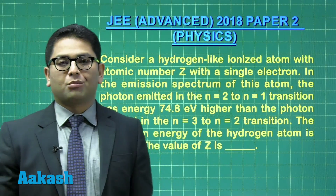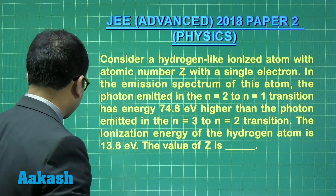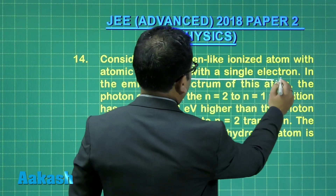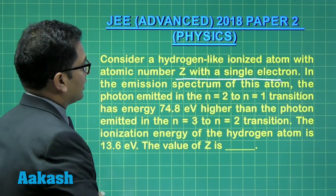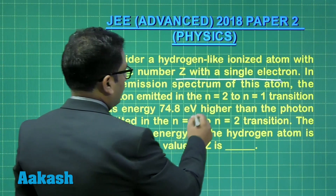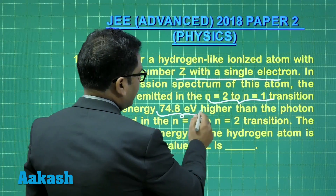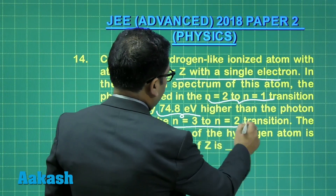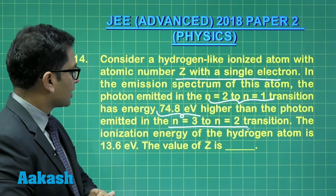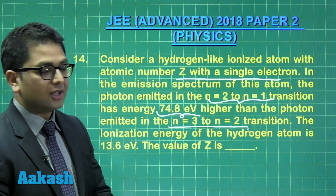Another question from modern physics — straightforward. Consider a hydrogen-like ionized atom with atomic number Z and a single electron, meaning all Bohr's equations would be valid. In the emission spectrum of this atom, the transition from 2 to 1 has an energy so many times higher than the photon emission from the transition 3 to 2. The ionization energy is given; we need to find the value of Z.